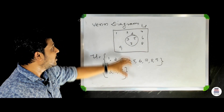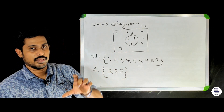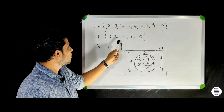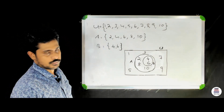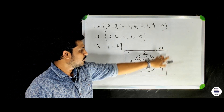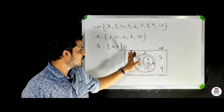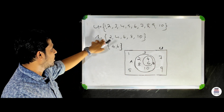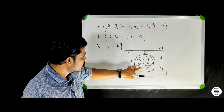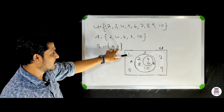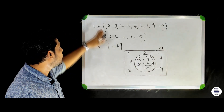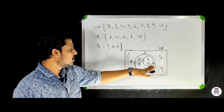Here is one example of a Venn Diagram. Let U = {1, 2, ..., 10}. Set A = {2, 4, 6, 8, 10}, which are the even numbers. Set B = {4, 6}. U is the universal set represented by a rectangle containing 10 numbers. A is represented by a circle, and B is a smaller circle inside A, showing that B is a subset of A.